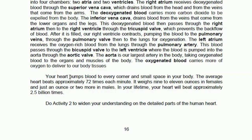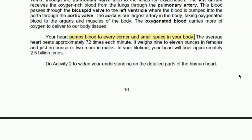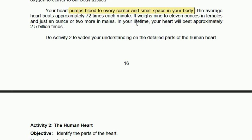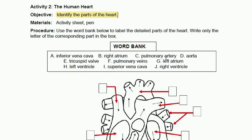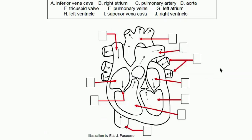Continue reading to find out the functions of each part. Your heart basically pumps blood to every corner and small space in your body. The heart's function is very important — blood carries oxygen, which helps us stay alive. After reading, you will answer Activity 2, where you identify the parts of the heart. You really have to copy this diagram because you will be writing down the letters of your answers.